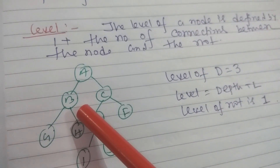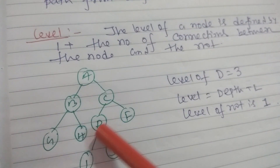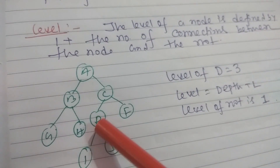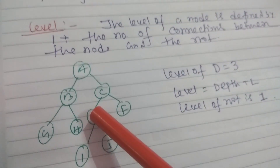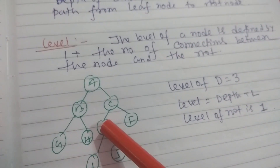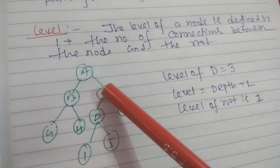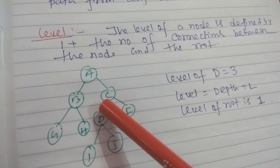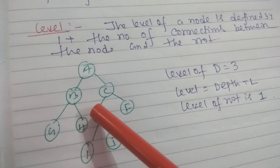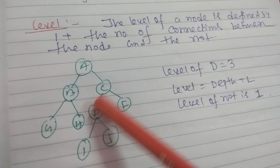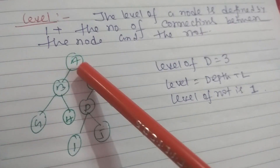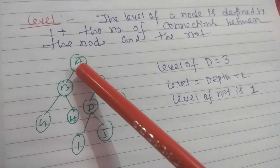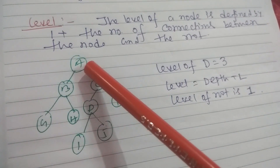Level is always equal to depth plus 1. The depth of node D going upward is 2, so the level of D is equal to the number of connections plus 1, which equals 3. The level of the root is equal to 1, because the depth of the root is 0, and depth plus 1 equals 1.